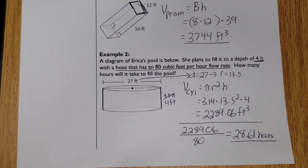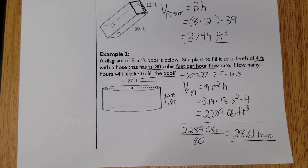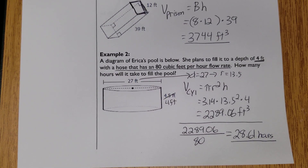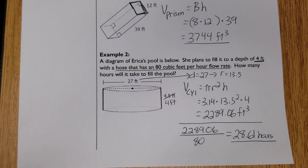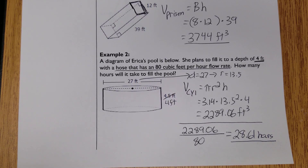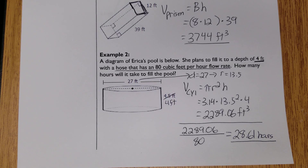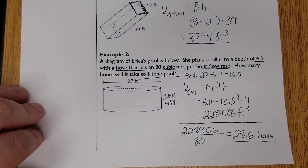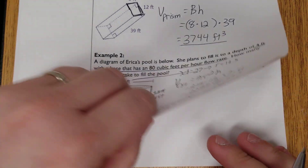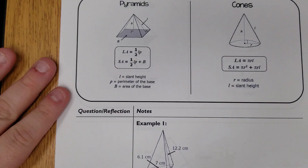For the next few pages of notes — and this is why we combined these lessons — you'll find the same pattern repeated. One page covers surface area of pyramids and cones, another covers their volume, then we do surface area and volume for a sphere. The only thing that changes each time is a new picture and therefore a new formula to apply. Let's jump into pyramid and cone.